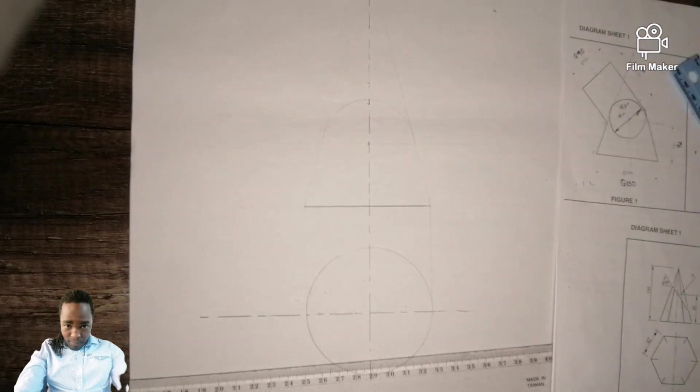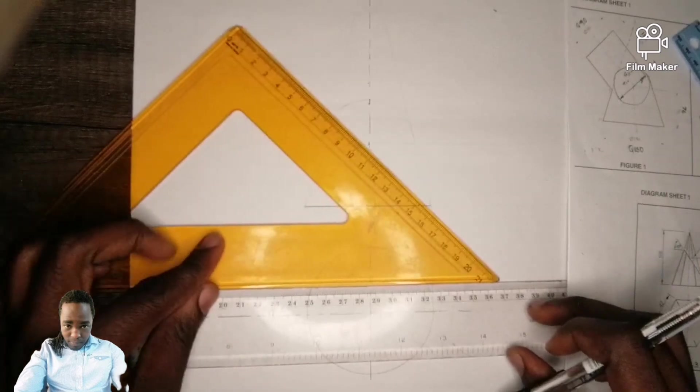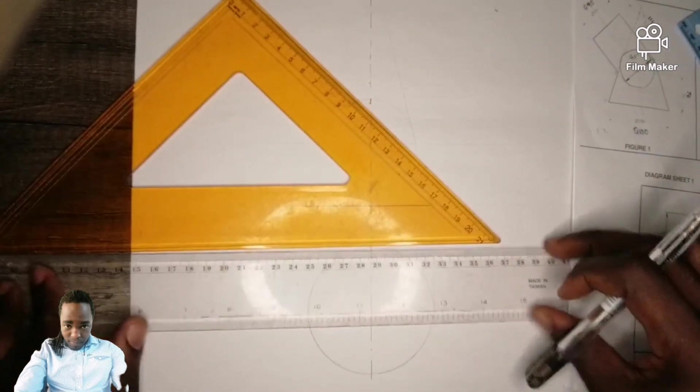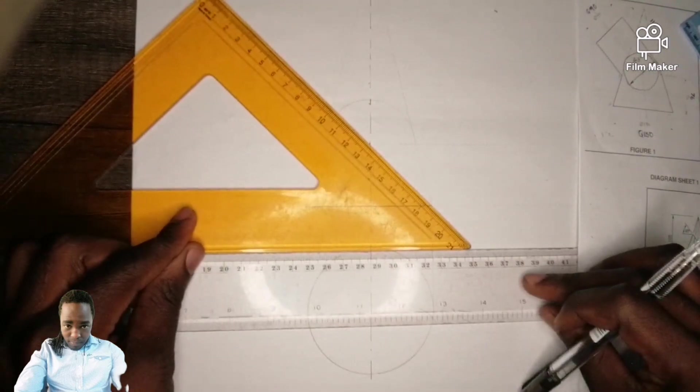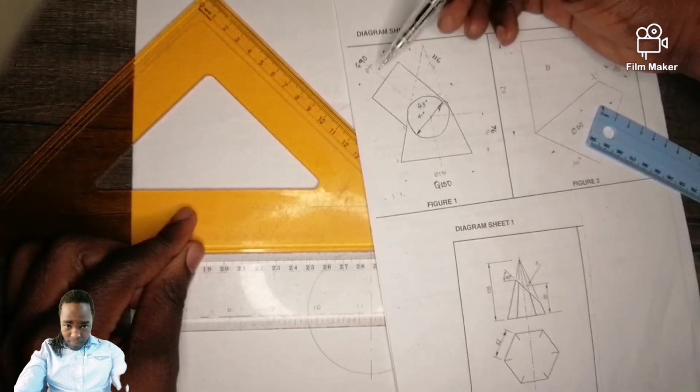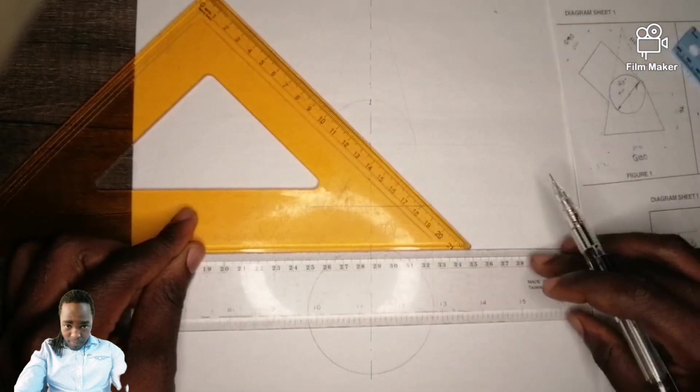Draw it dark like this. Then from there, come back here, take the circumference of the side.